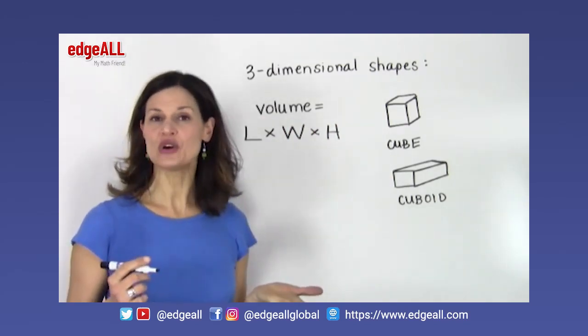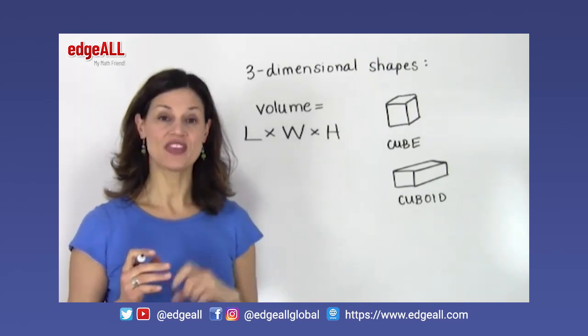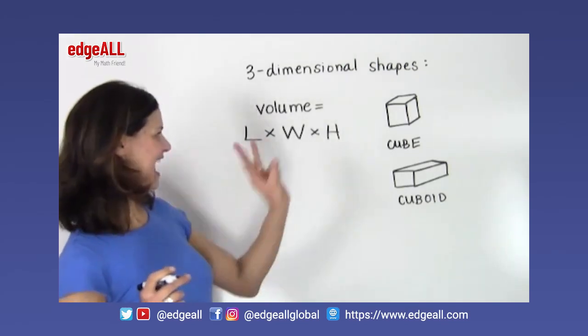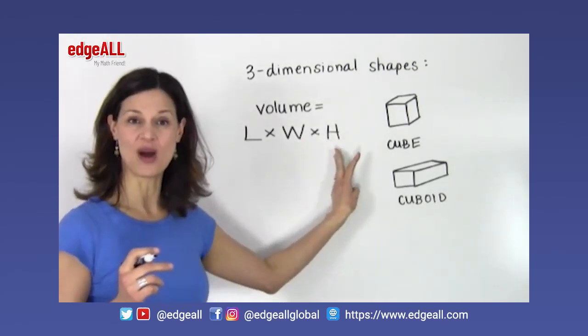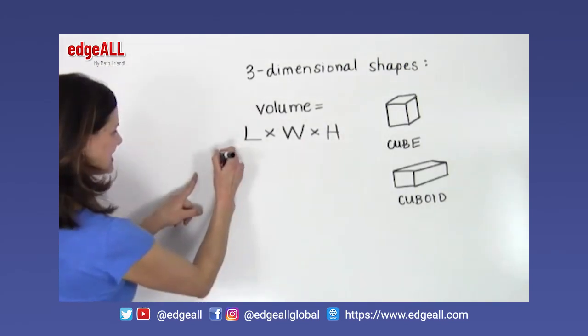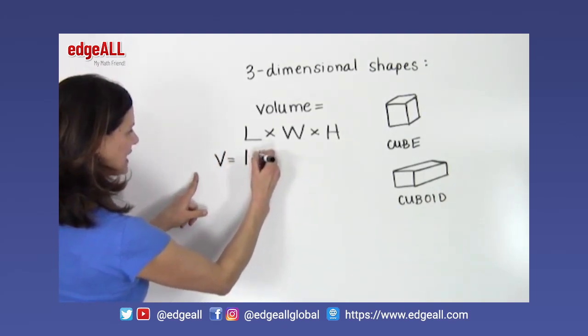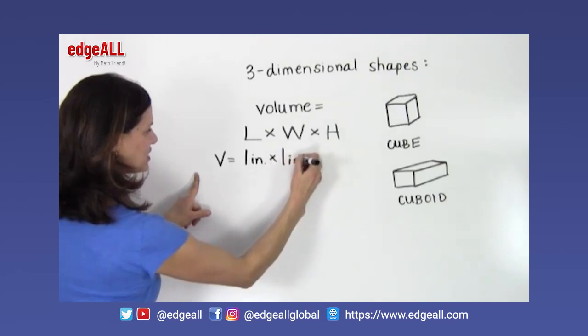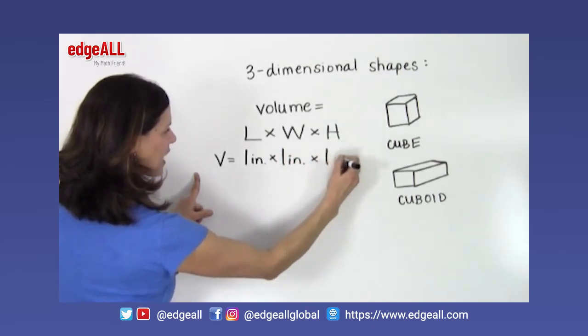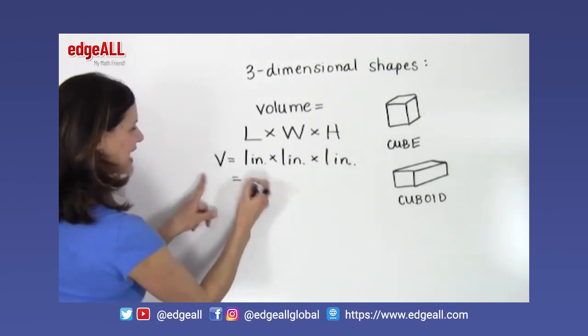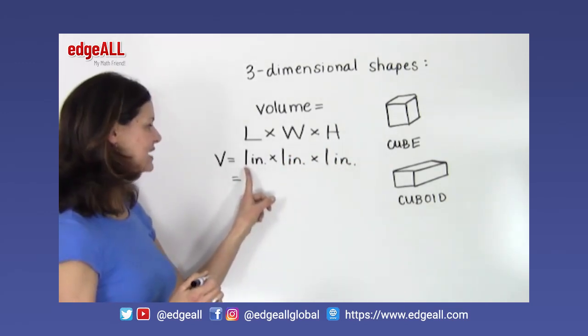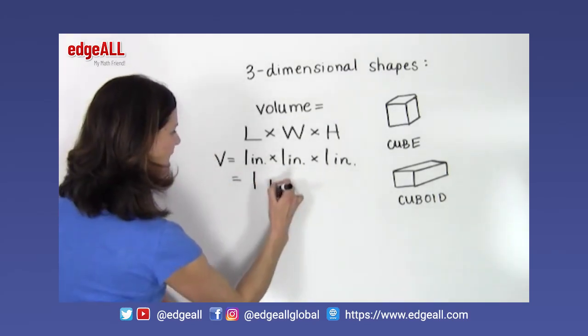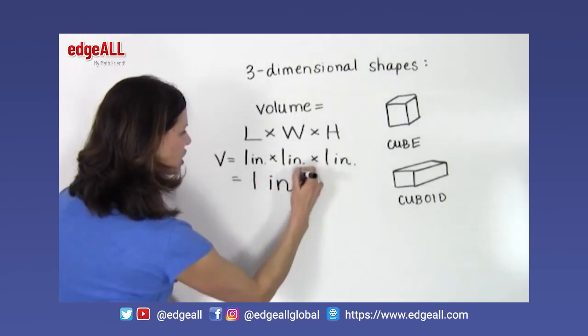So the volume of a cube with a length of 1 inch, a width of 1 inch, and a height of 1 inch would look like this. Volume would be 1 inch times 1 inch times 1 inch, and we would write the answer to that as 1 times 1 times 1, which equals 1 inch cubed.